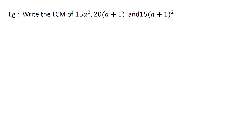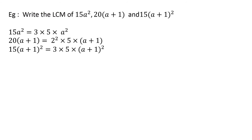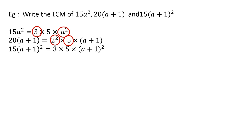Look at this example. 15a squared can be written as 3 into 5 into a squared. The next term 20(a plus 1) is 2 squared into 5 into (a plus 1). And 15(a plus 1) whole thing squared can be written as 3 into 5 into (a plus 1) whole thing squared. Among the powers of 2, 2 to the power 2 is the highest; for 3 it is only 3; 5 must also be considered; the highest power of a is a squared; and the highest power of (a plus 1) is (a plus 1) squared. The product of all these terms is the LCM.